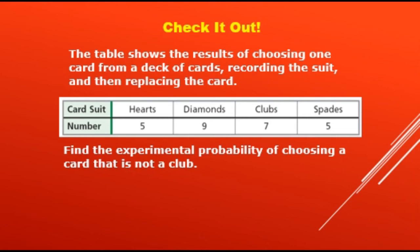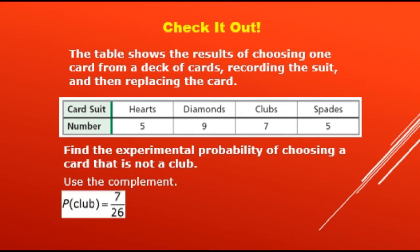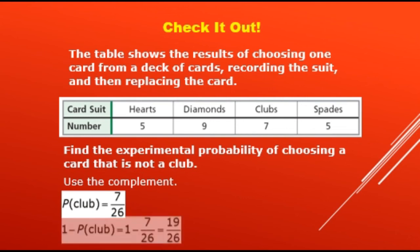Now it's your turn. The table shows the results of choosing 1 card from a deck of cards, recording the suit, and then replacing the card. We have 5 hearts, 9 diamonds, 7 clubs, and 5 spades. Find the experimental probability of choosing a card that is not a club. Using the complement: P(club) = 7 over 26, so 1 minus P(club) = 1 minus 7/26 = 19 over 26. You can also verify: 5 plus 9 plus 5 = 19, over the total of 26 trials.